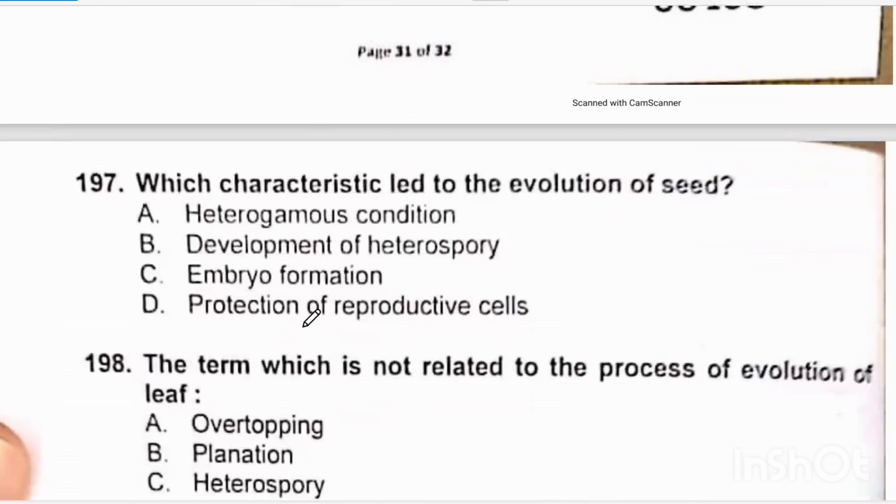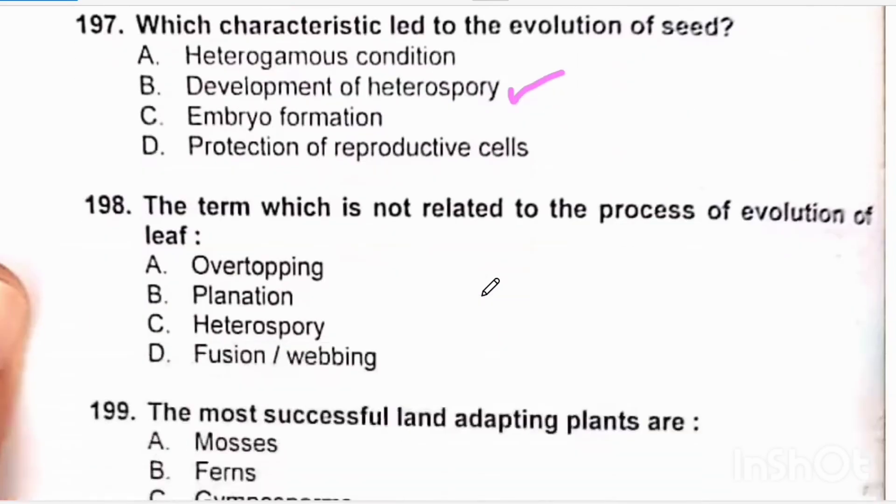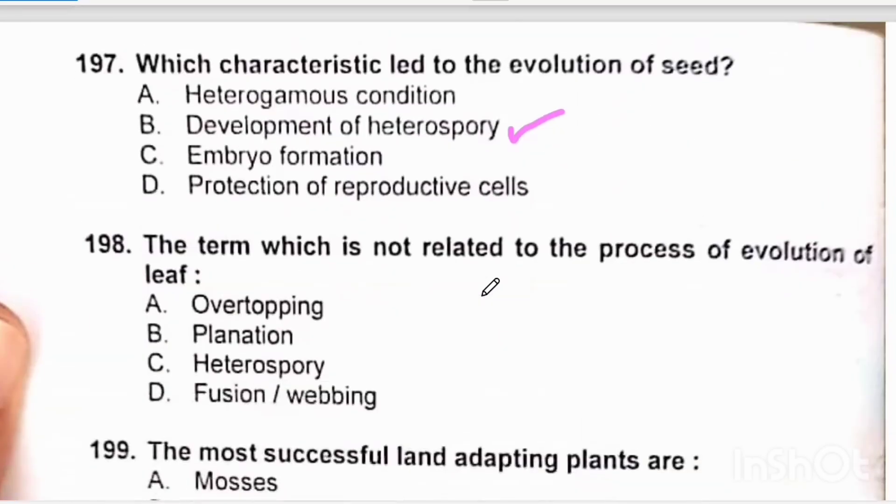Which characteristic led to the evolution of seed? Heterospory led to the evolution of seed. The term which is not related to the process of evolution of leaves is heterospory. This was involved in the evolution of seed. Overtopping, planation, and fusion, then webbing, were involved in the evolution of leaves.